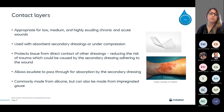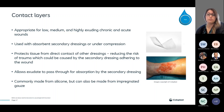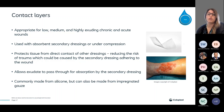Contact layers are appropriate for low, medium, or highly exuding chronic and acute wounds. They are used with an absorbent secondary dressing and can be used under compression. Contact layers protect tissue from direct contact with other dressings, reducing the risk of trauma caused by secondary dressings adhering to the wound bed. They allow exudate to pass through for absorption by the secondary dressing, and are commonly made from silicone but can also be made from impregnated gauze.